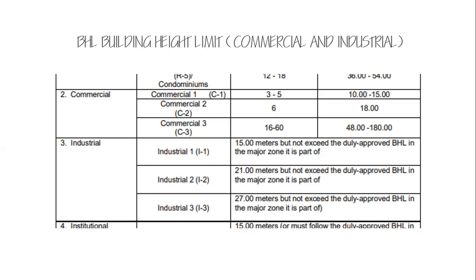For industrial buildings, you're allowed 15 meters but must not exceed the duly approved BHL in the major zone the building is part of. There are additional restrictions on building height based on the zone — for example, in the Lapu-Lapu airport zone, the Civil Aviation Authority of the Philippines imposes height restrictions because of aircraft landing paths.